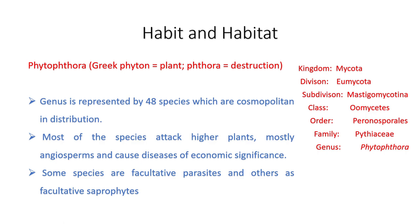Since it is a member of Oomycetes, its wall contains cellulose. In most fungi the wall is made up of chitin, but in Oomycetes the wall is made up of cellulose. However, in Phytophthora cellulose is present only in a very minor amount and the wall is mainly made up of glucan. Since it is a member of Mastigomycotina, it has flagellated zoospores bearing Mastigonemes — tinsel-type flagella.